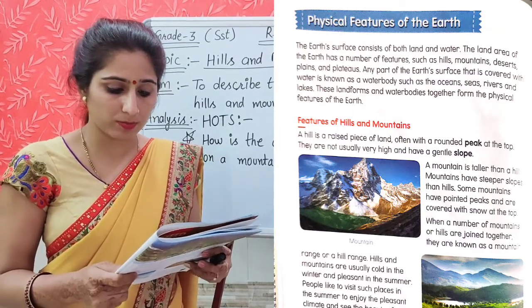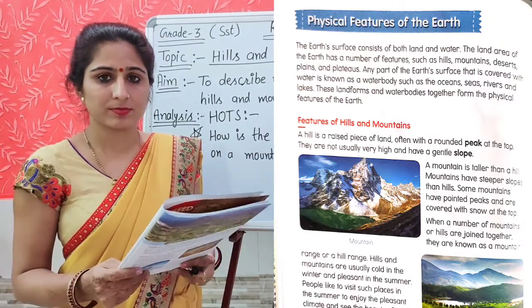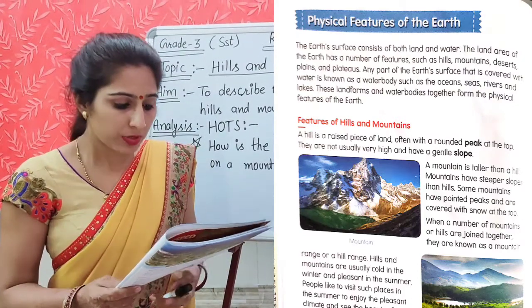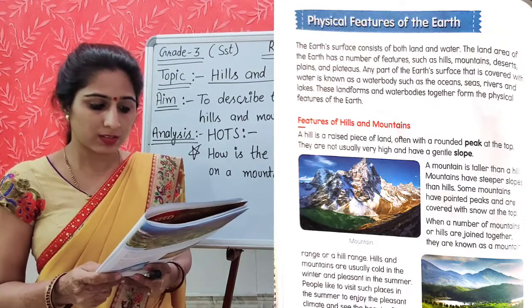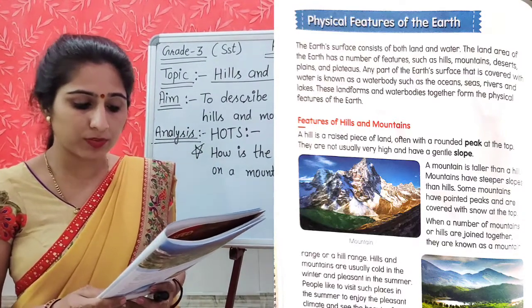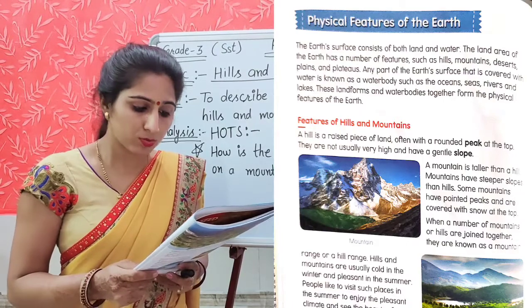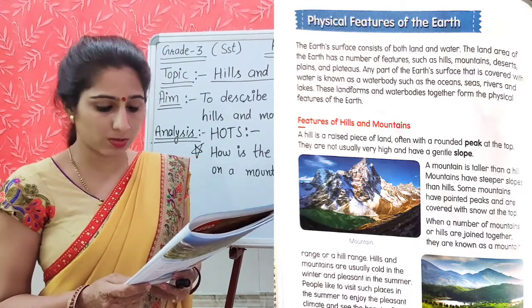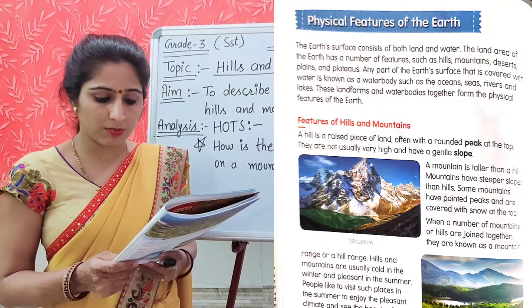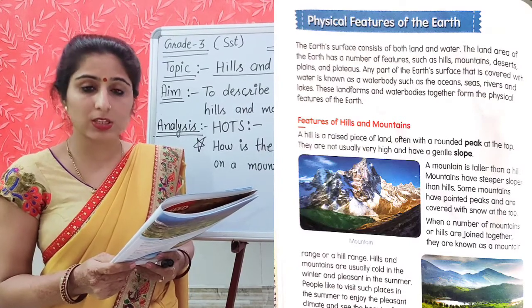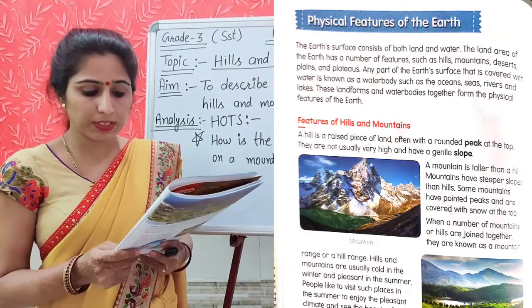Any part of the earth's surface that is covered with water is known as a water body, such as oceans, seas, rivers, and lakes. These landforms and water bodies together form the physical features of the earth. A hill is a raised piece of land, often with a rounded peak at the top.